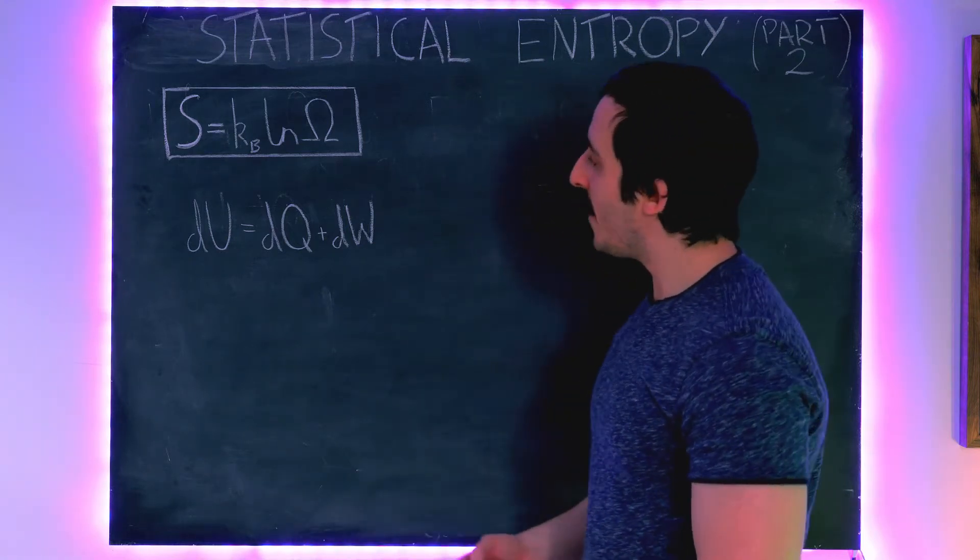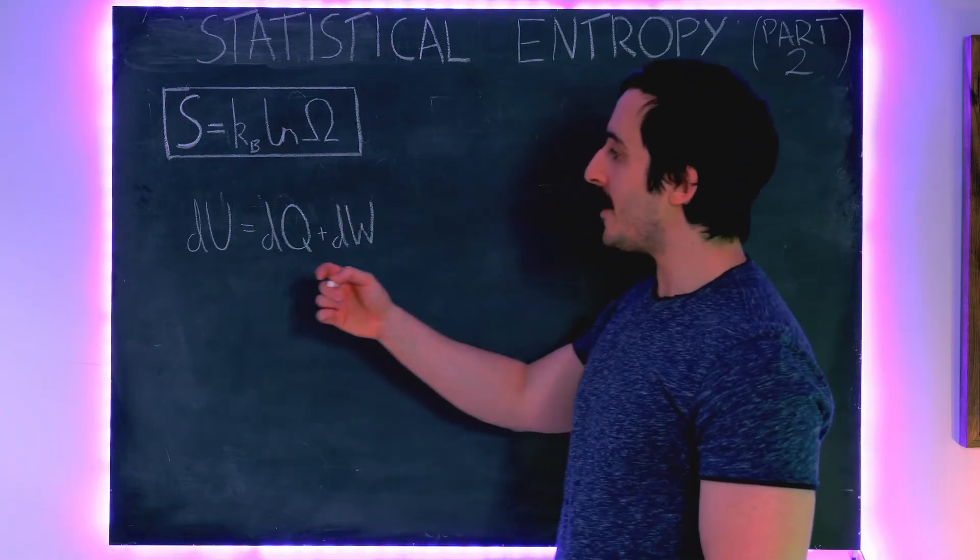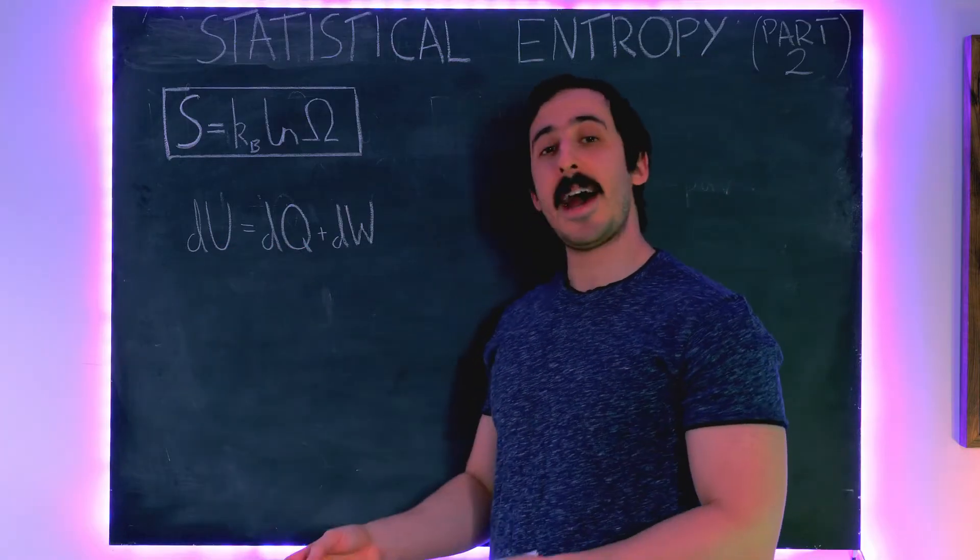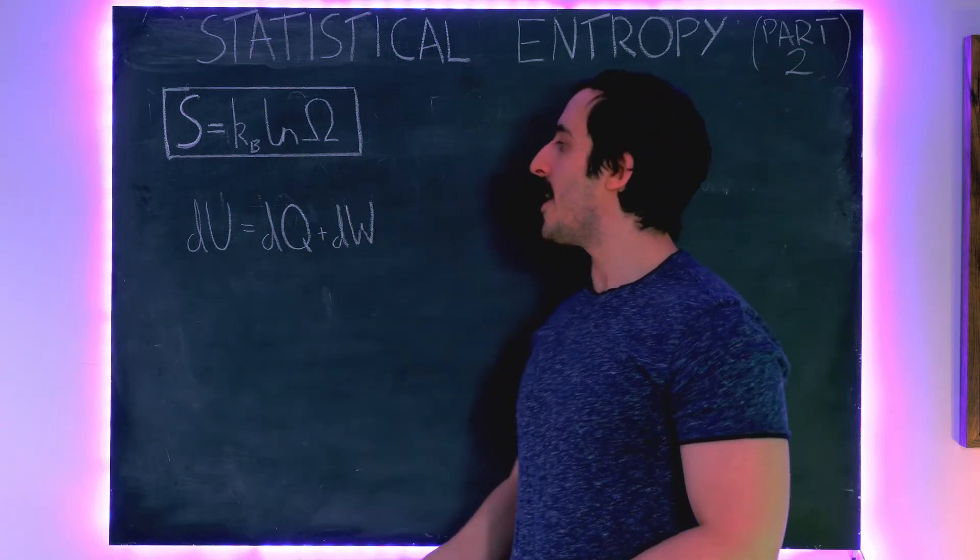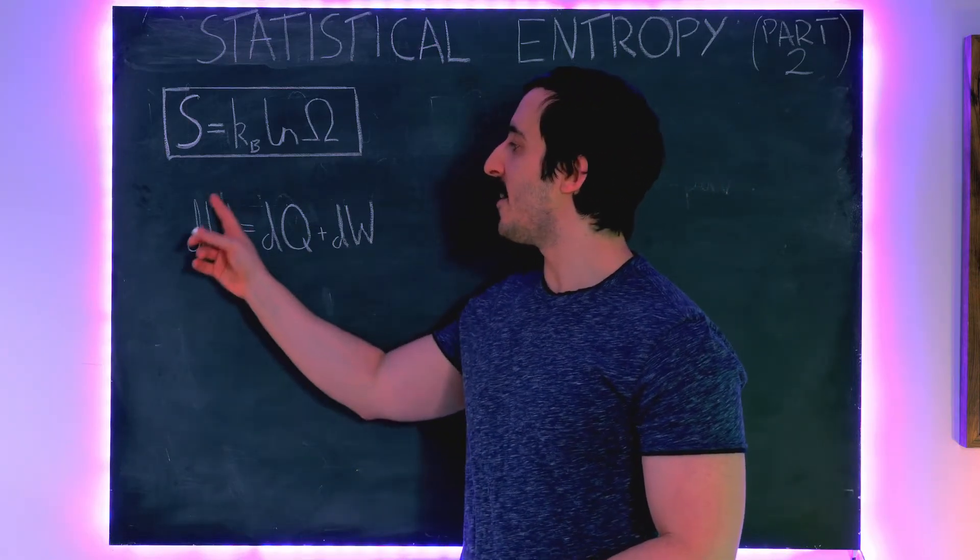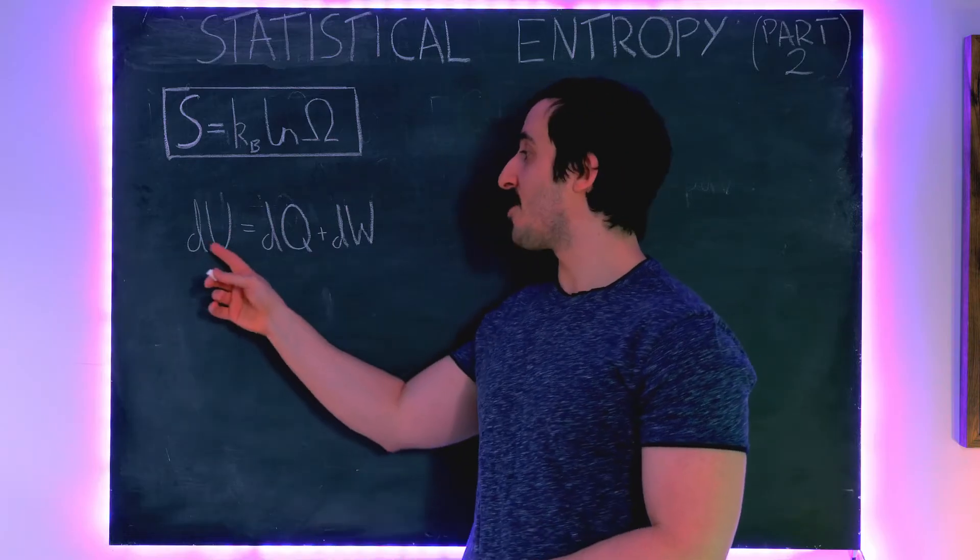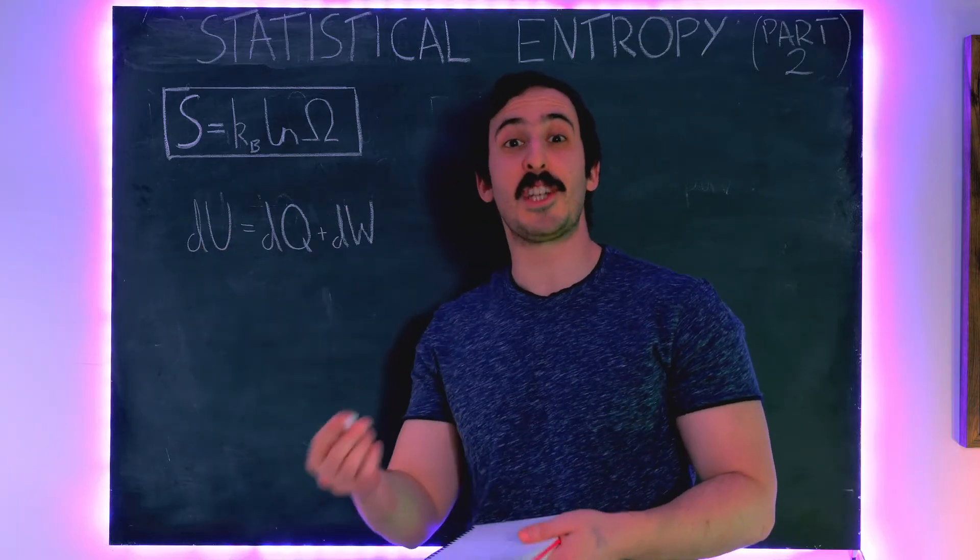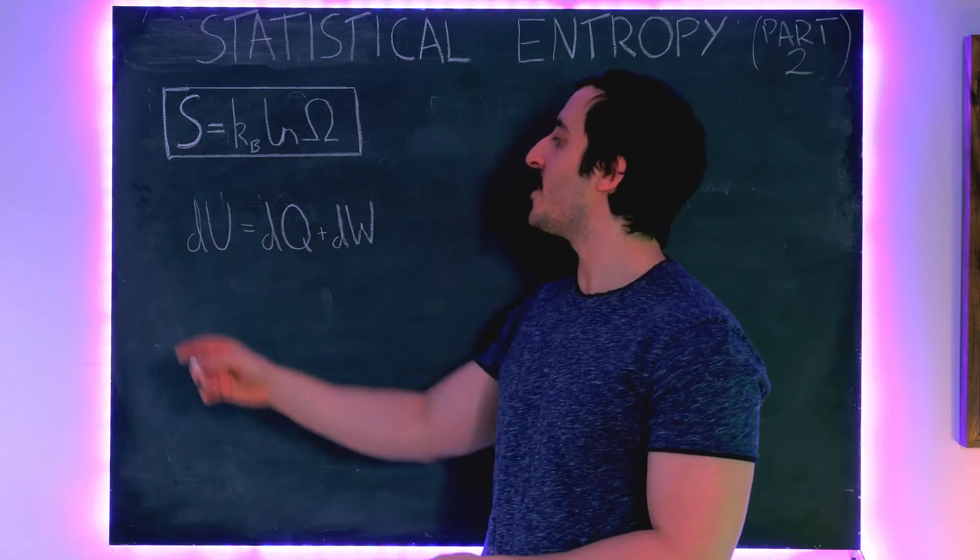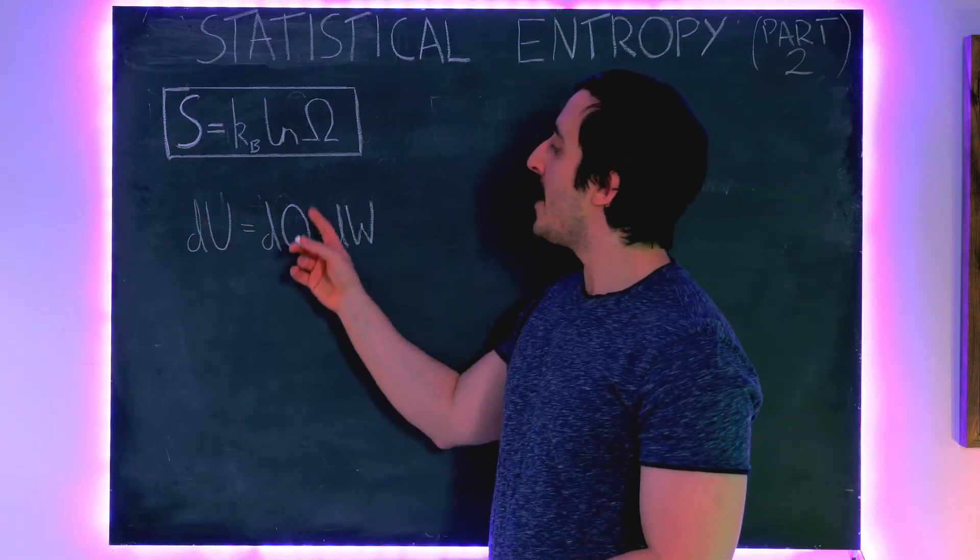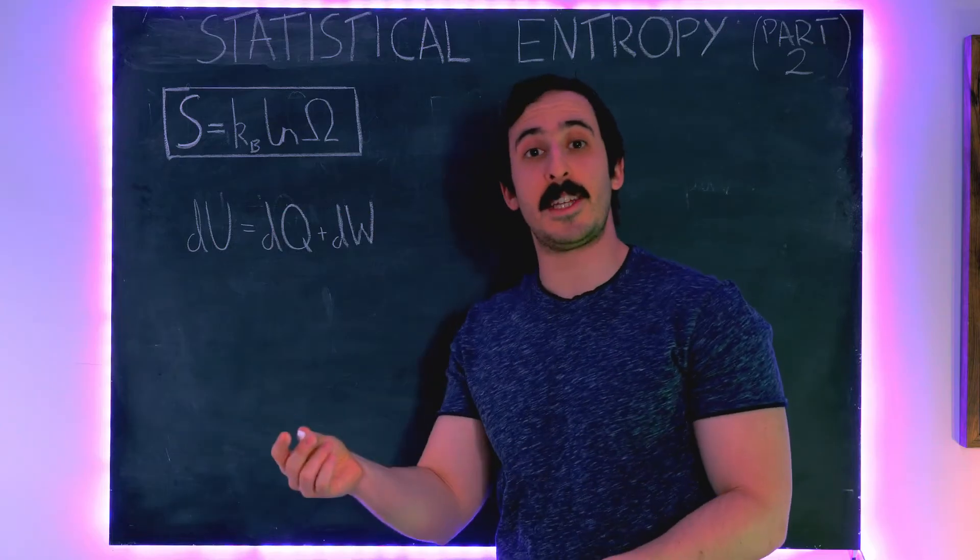So the first law of thermodynamics says that if we have some system and that system has internal energy equal to U, then if we change the internal energy of that system, which I've written as dU, d means a very small change, so a very small change in the internal energy of the system is equal to dQ which is the heat we put into the system, the small bit of heat we put into the system, plus dW which is the small bit of work we put into the system, the work we do on the system.